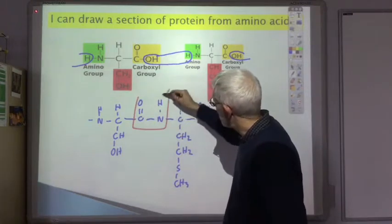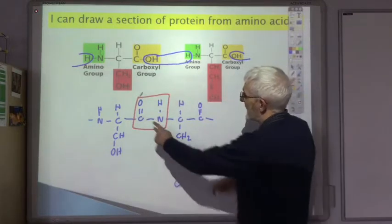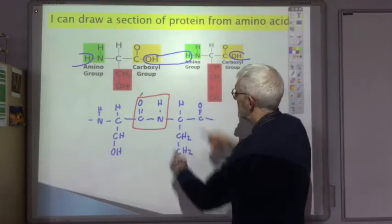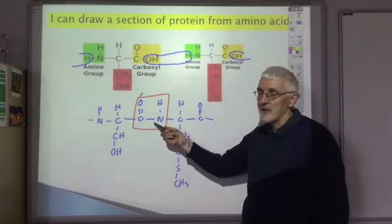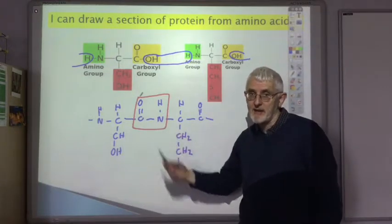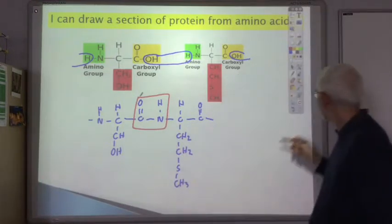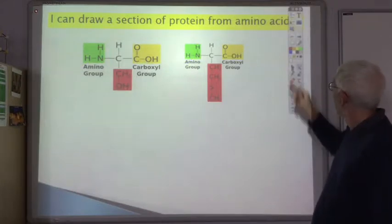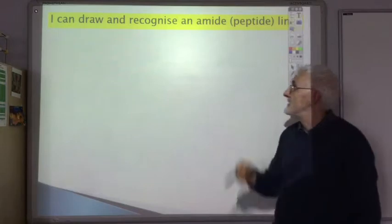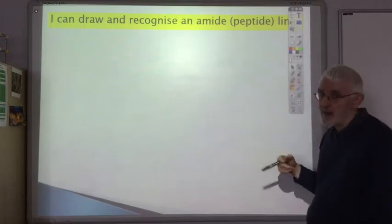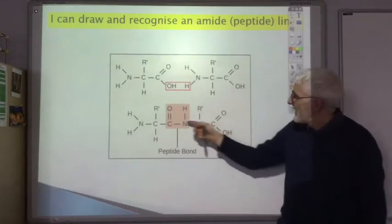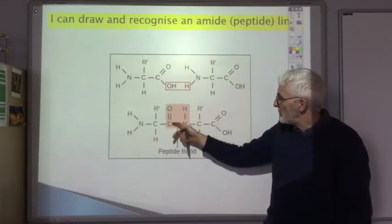The place where they are joined together — where the carbon came from one amino acid and the nitrogen came from the other — is called the amide link, or sometimes called the peptide link; both are acceptable. You should be able to draw and recognize an amide/peptide link: it's the C double bond O, NH group.